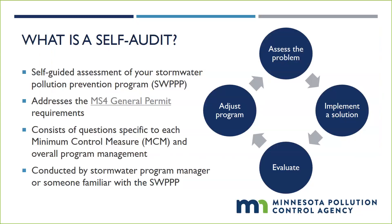A self-audit of your MS4 program is an assessment of your stormwater pollution prevention program, also called a SWPP. Your SWPP is your stormwater management program — it is all activities planned and implemented to meet the requirements of the MS4 general permit and effectively reduce or minimize impacts to stormwater in your community.